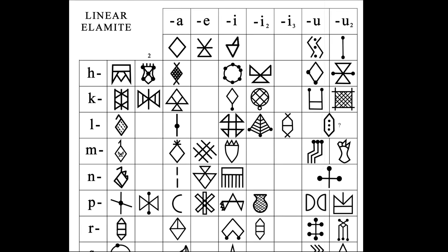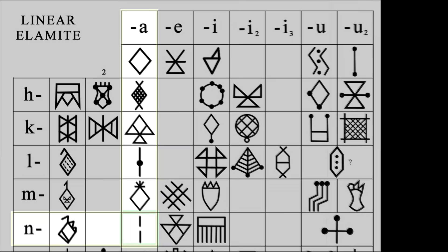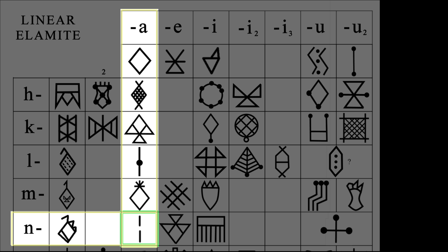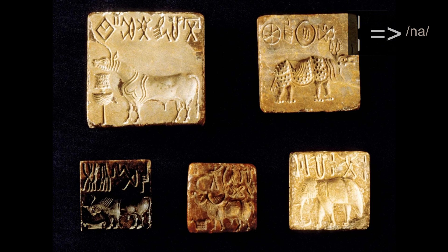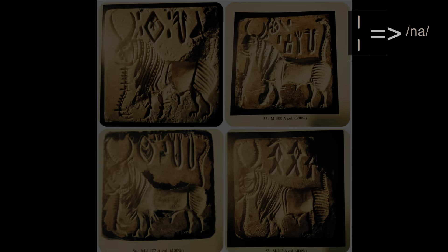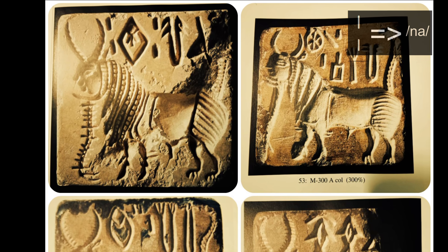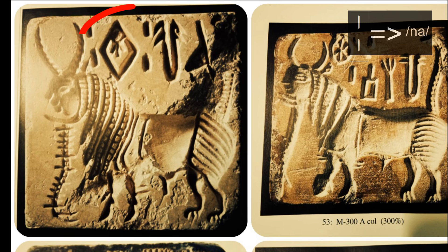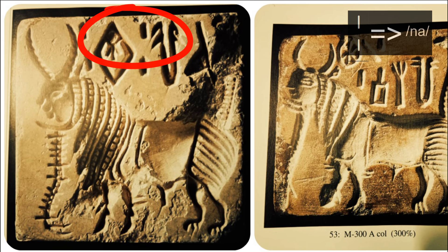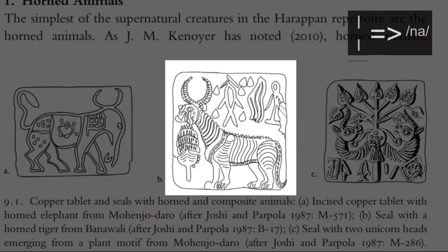So first we started with the simplest symbol in the Indus script, the dotted line. And yes, we could find it in the Linear Elamite. In Linear Elamite, it sounds as N or Na. No assumptions yet, let's hold on to it for now. Now to see if this works, we move to the bigger combination of Indus seals. Here we can see that the Indus script usually has the dotted line in combination of twos, mostly on either sides of the phrase, like this sign here, or this other sign on this another seal.